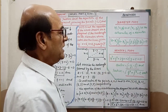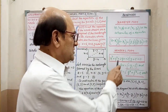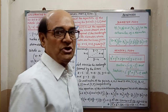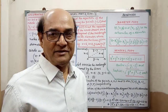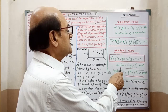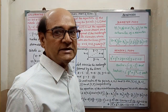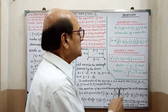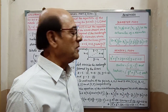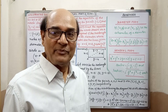Next, general form: x squared plus y squared plus 2gx plus 2fy plus c equals 0. This form you have to remember. In this case, the center will always be (minus g, minus f) and radius equals root over g squared plus f squared minus c. You have to remember.